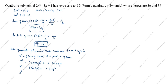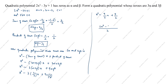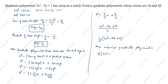Substituting: x squared minus 3 times (3 by 2) x plus 9 times (1 by 2), which gives x squared minus 9 by 2 x plus 9 by 2. Taking 1 by 2 outside, the required quadratic polynomial is 1 by 2 times (2x squared minus 9x plus 9).